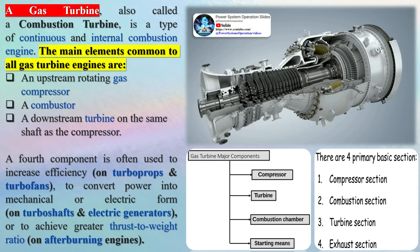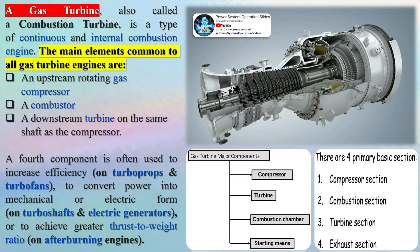A fourth component is often used to increase efficiency on turboprops and turbofans, to convert power into mechanical or electric form on turboshafts and electric generators, or to achieve greater thrust-to-weight ratio on afterburning engines.